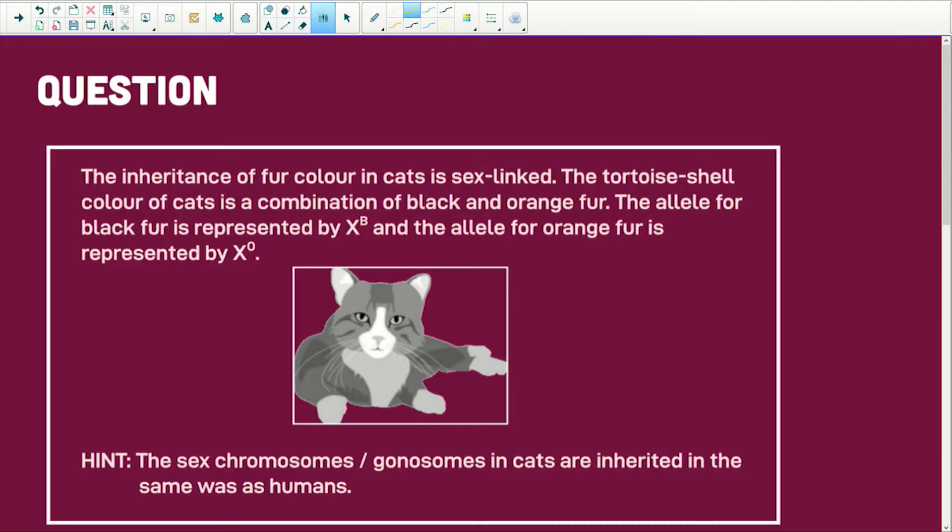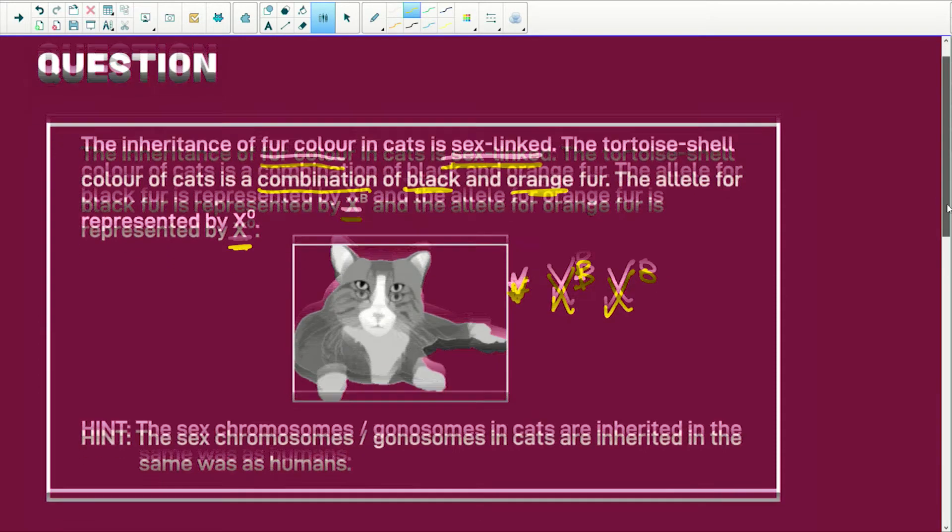Let's see. The inheritance of fur colour in cats is sex-linked. In other words, it's going to sit on X and Y chromosomes. The tortoiseshell colour of cats is a combination of black and orange. The allele for black fur is represented by XB and the allele for orange is XO. So this little kitty here is going to be XBXO. Tortoiseshells, when they've got all those different colours on them.